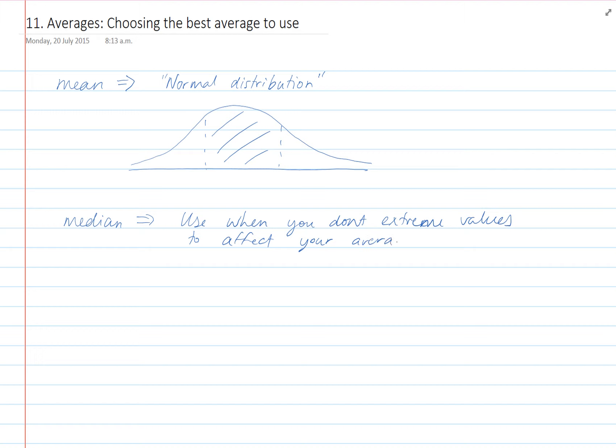An example of where this gets used a lot is house prices. If we made a scale here of house prices, we're at zero, and say that's $200,000, $400,000, $600,000, $800,000, and so on, $1,000,000.